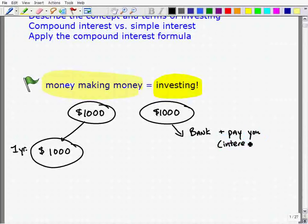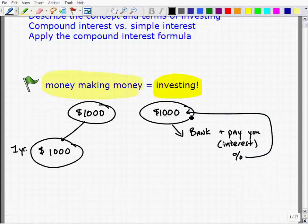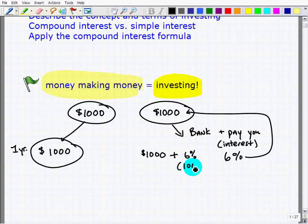The interest is going to almost always be some percentage of the amount you put in. So the bank will say, in this example, we're going to pay 6% of the money you decide to invest with us. At the end of one year, you have $1,000 plus 6% of that $1,000, and 6% of $1,000 is $60.